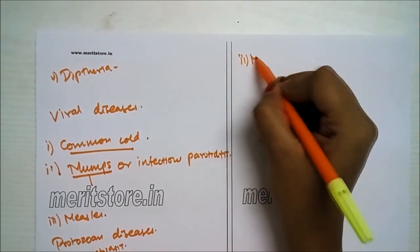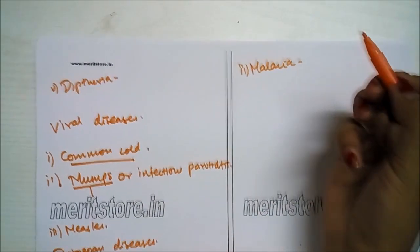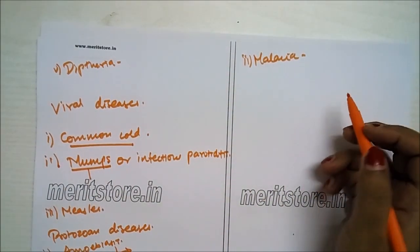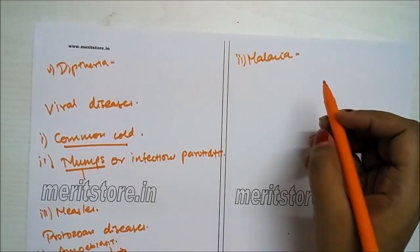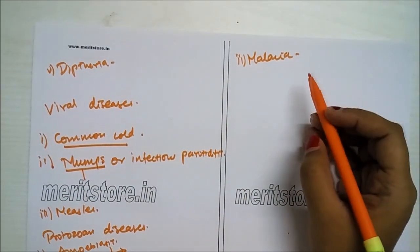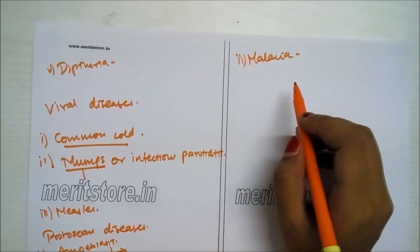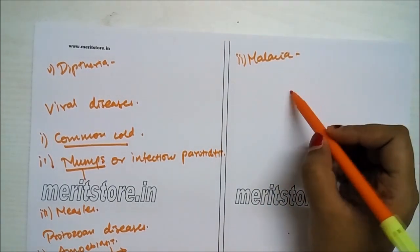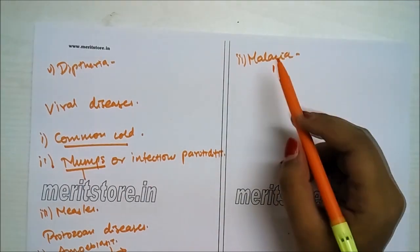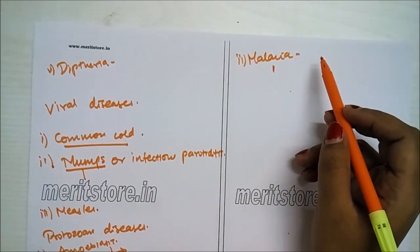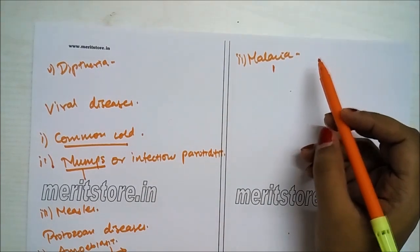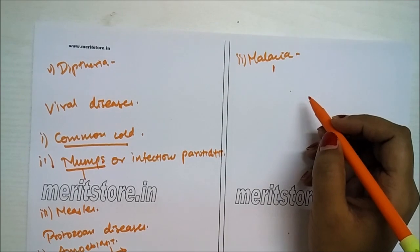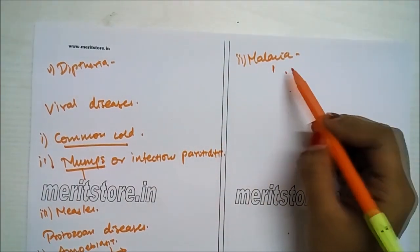Second is malaria, caused by a digenetic (two hosts) and triphasic (three phases) protozoan parasite known as Plasmodium. The life cycle of Plasmodium requires two hosts: humans and mosquitoes. Plasmodium enters the human body as sporozoites through the bite of an infected female Anopheles mosquito. The sporozoites reach liver cells via blood where they initially multiply, then attack the RBCs.